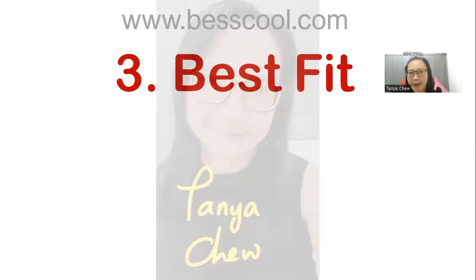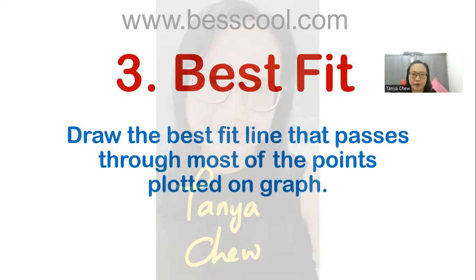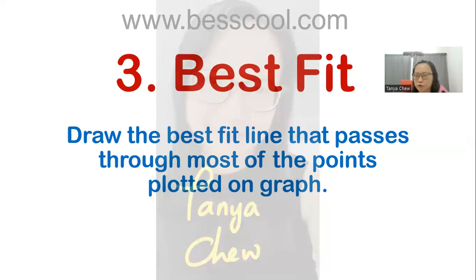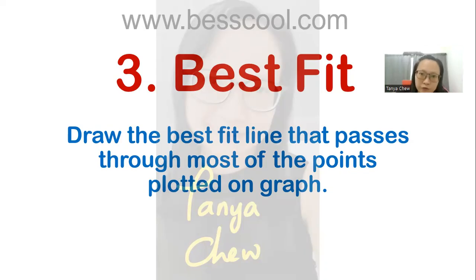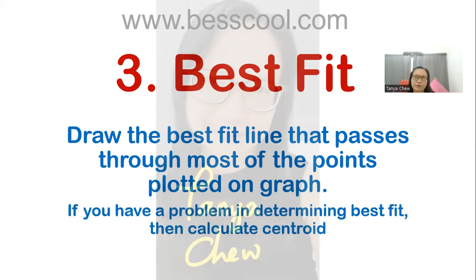Tip number three: best fit line. A best fit is a straight line that passes through most of the points plotted on the graph. Since we are human and conduct experiments, some errors occur due to inaccuracy, and we cannot get all the points lying exactly on a straight line. When you face this kind of problem, all you need to do is draw your best fit line. Some students have difficulties in determining the best fit line, but I have a tip for you — an extra tip.